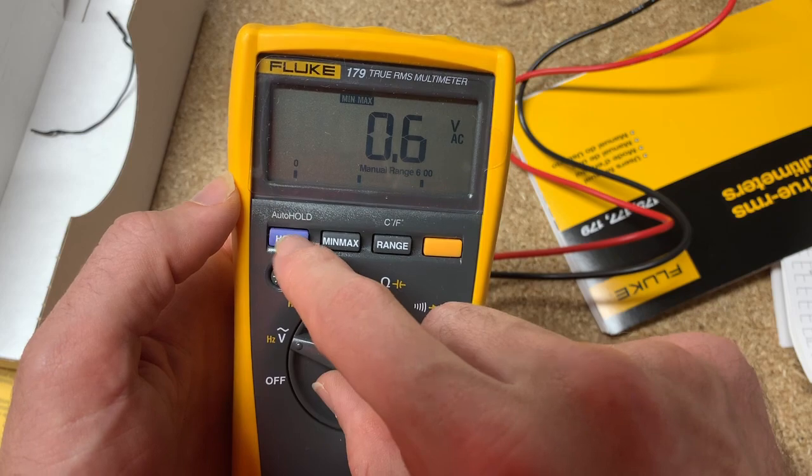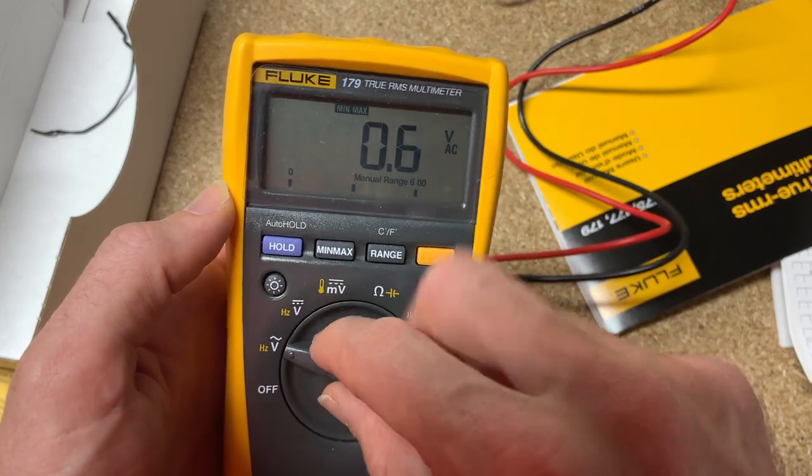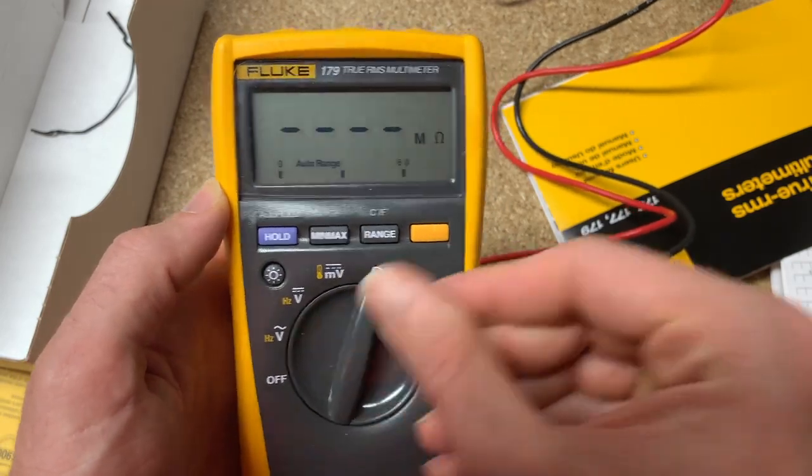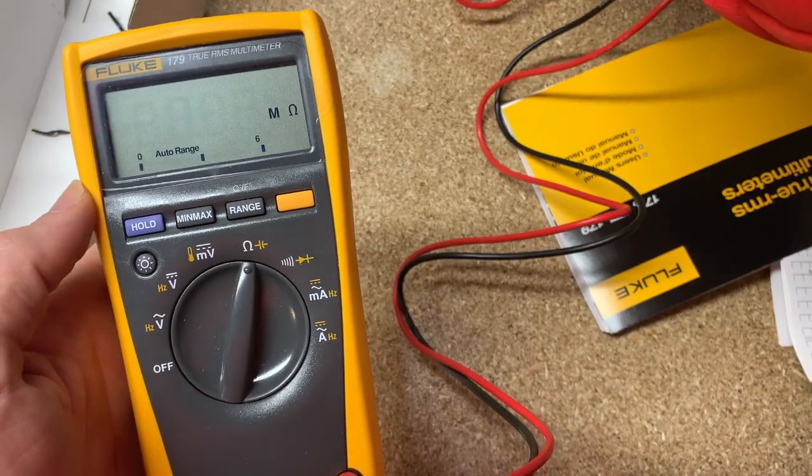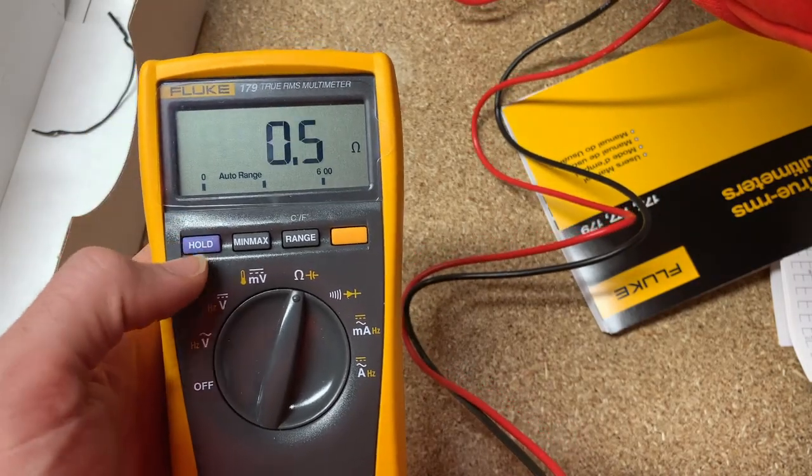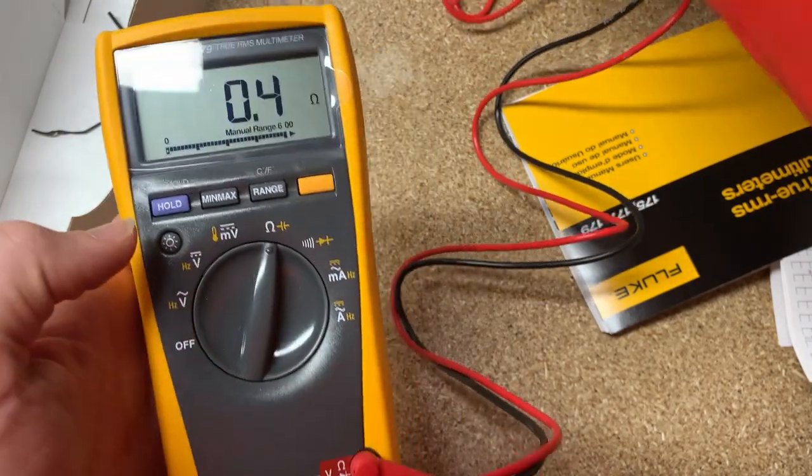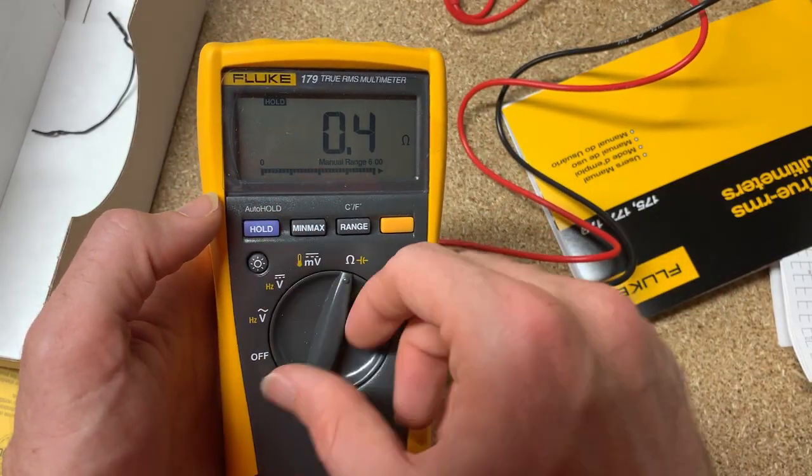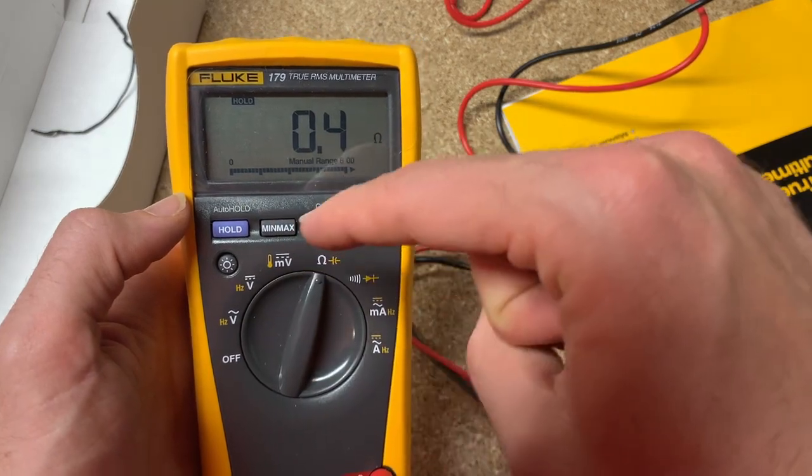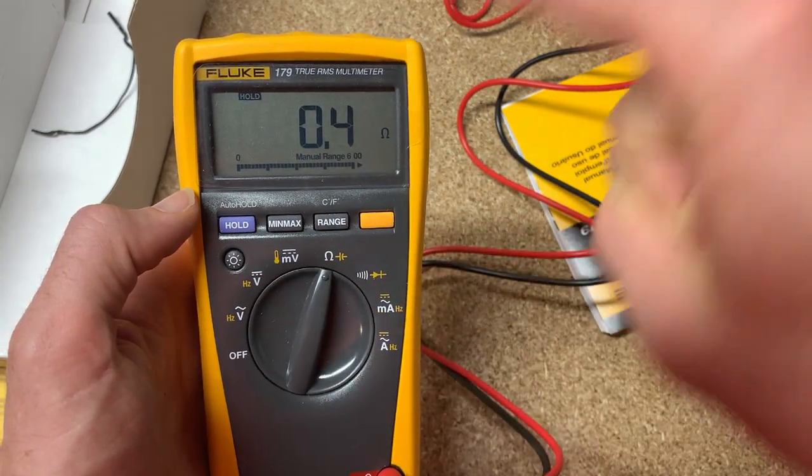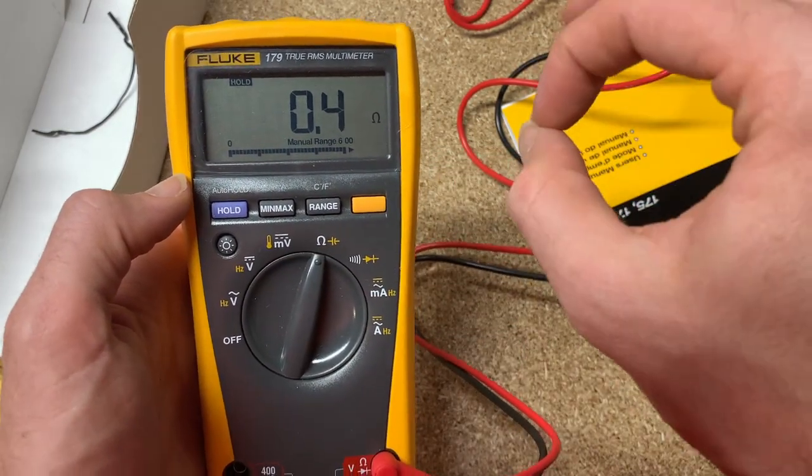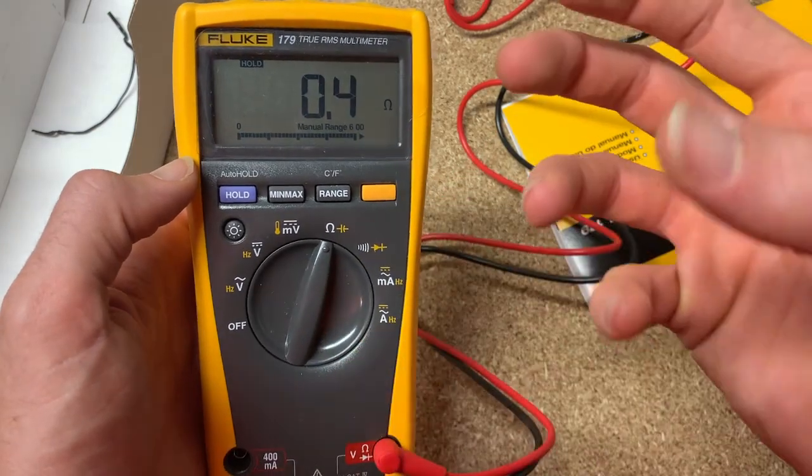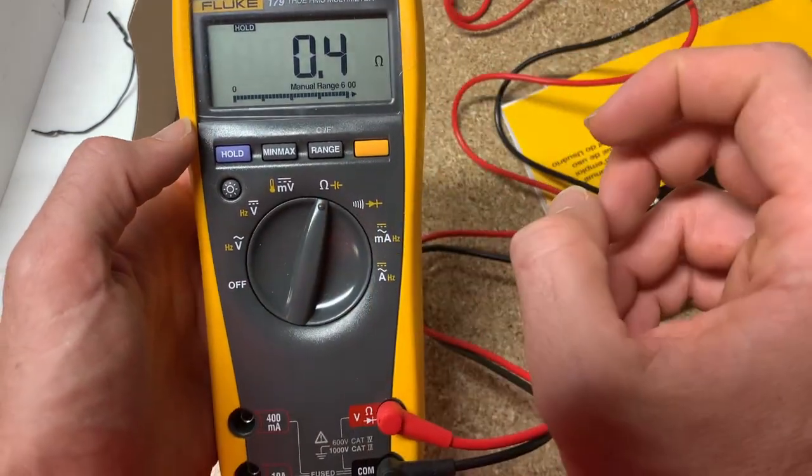And then you have hold where you can use it in any function. If you like what you see and you want to hold that, you can do that, bring it back, write it down somewhere. And then you have an auto hold, which is just going to watch for a voltage change or whatever, and then it's going to hold with whatever it thinks that you're trying to hold for.